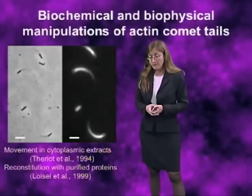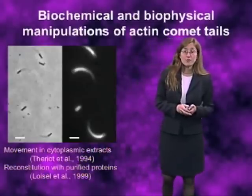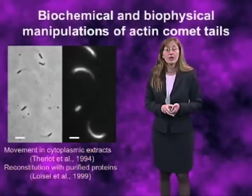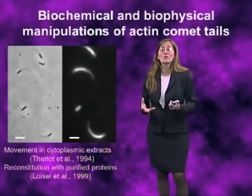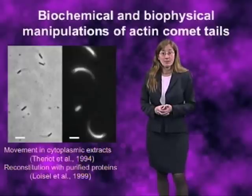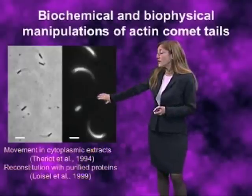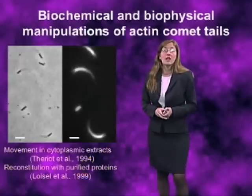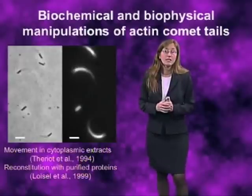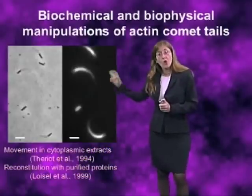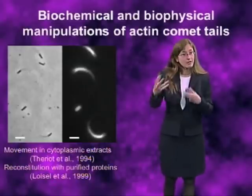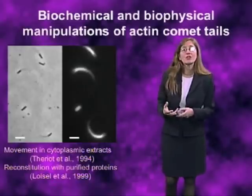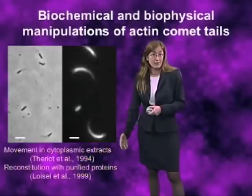This cooperative work by a very large number of groups resulted in 1999 in a heroic reconstitution of the entire process by the lab of Marie-France Carlier, where they showed they could get fairly decent motility with just a mixture of four different proteins, and almost perfect motility with just a mixture of seven different proteins. So at the level of biochemistry, this is something we actually understand fairly well.